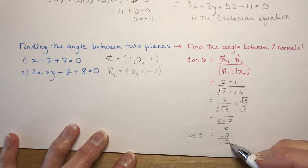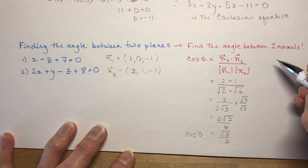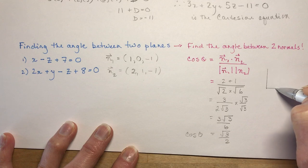So cos theta equals root three over two. Do you remember where cos theta is root three over two? Think back to your special triangles. Let's do it. Let's draw some special triangles. You know it has to do with the 30, 60 ones.